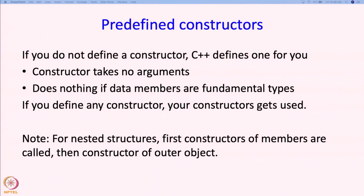A note about nested structures: if you have a rectangle structure and inside it there is a point struct, the constructors work in the following manner. First, the point objects inside the rectangle will be constructed using the constructors for point. Only after the data members are constructed will the constructor for the outer object get called.